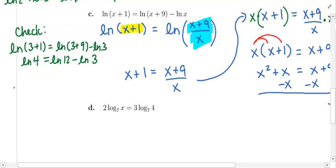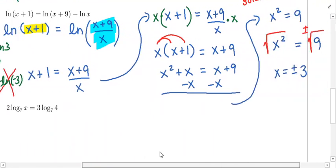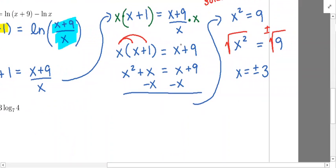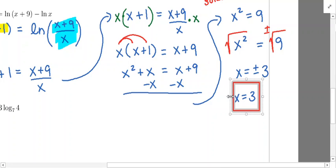Now let's check negative 3. Plugging in negative 3 for x, we get the natural log of negative 3 plus 1 — that's the natural log of negative 2 — which means we're taking the natural log of a negative number. That's bad. So we need to exclude negative 3 as a solution. Out of the two solutions, only x equals positive 3 is viable; x equals negative 3 is excluded. So x equals 3 is the only solution.